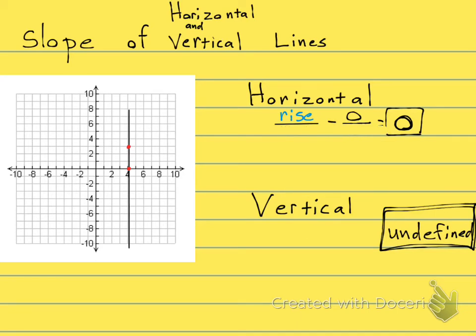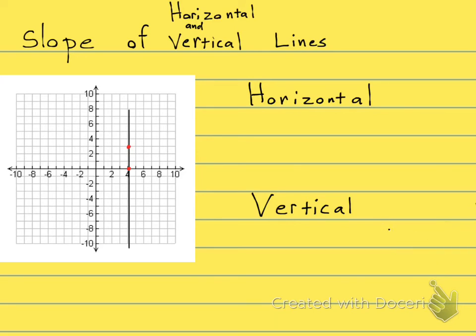One of these has a slope of zero. And one of them has a slope that is undefined. Which one has the slope that's zero? Horizontal or vertical? I'm going to give you a hint.